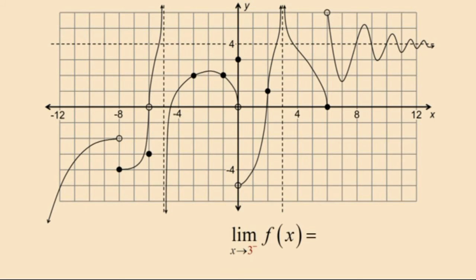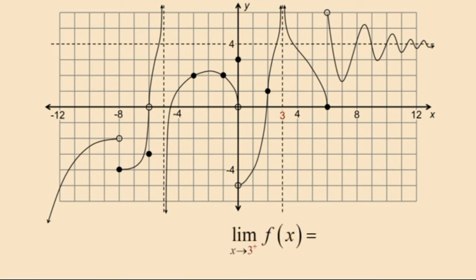Now let's take a look at the limit as x approaches 3 from the left of f of x. Notice that our function values are increasing without bound to positive infinity. Therefore our limit is equal to positive infinity. Now let's approach 3 from the right. Once again we can see that the function values are increasing without bound towards positive infinity. Therefore again our limit is equal to positive infinity.